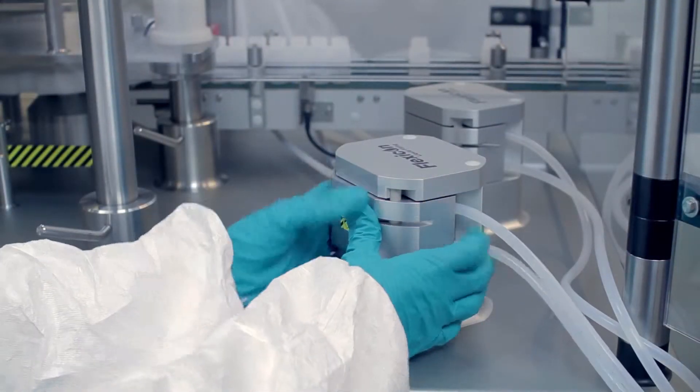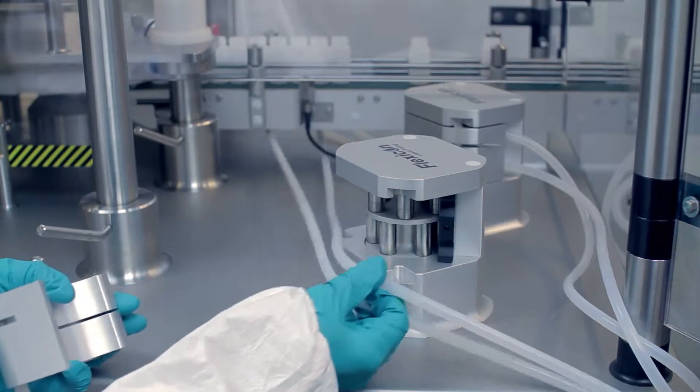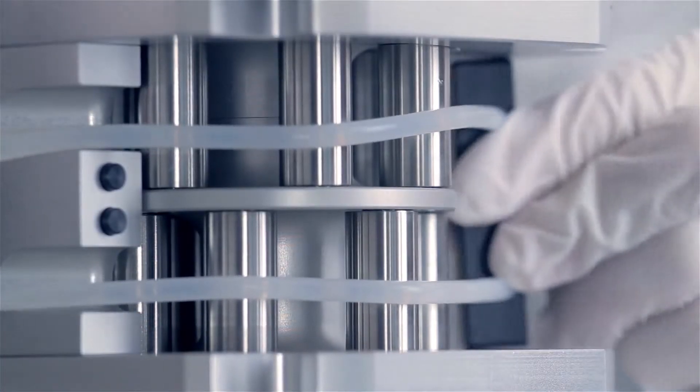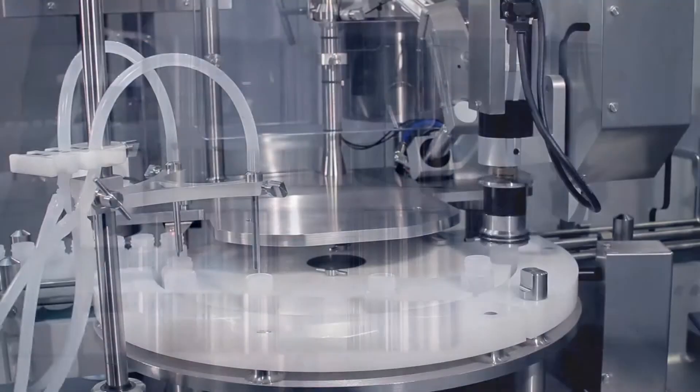Peristaltic fillers prevent costly overfilling on volumes from less than 0.2 millilitres to 250 millilitres. Liquid only contacts a single-use fluid path, so changeover from one liquid to another can be done quickly without the risk of cross-contamination.